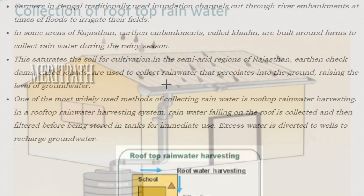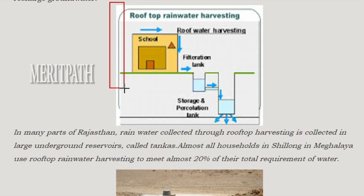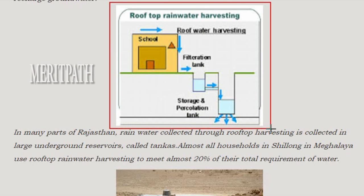One of the most widely used methods of collecting rainwater is rooftop rainwater harvesting. In this system, rainwater falling on the roof is collected, filtered, and stored in tanks for immediate use. Excess water is diverted to wells to recharge groundwater. The rainwater is passed through a filtration tank and then to a storage and percolation tank, with excess water used to recharge groundwater.